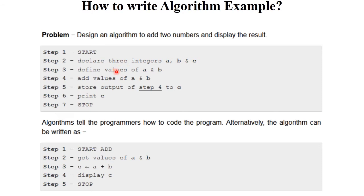In the third step, we have to provide values to A and B for the addition — so define the value of A and B. In the fourth step, we have to perform addition: add value of A and B. In step 5, we have to store the output of A plus B into C. For example, if A is 10 and B is 5, then 10 plus 5 is 15 — we store the output into C. The last step is print C to display the result. This is your sixth step, and the last word is stop. This is the simple structure of an algorithm.